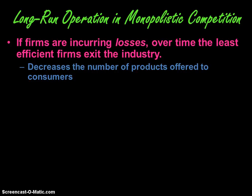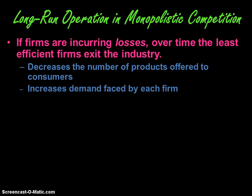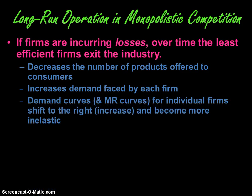This is going to have the opposite effect on the market — it's going to decrease the number of products offered to consumers. Let's say Netflix went out of business; that's going to cause consumers to have less choices than before. This is going to increase the demand faced by the firms that are able to survive and stay in the market. So Walmart DVD rentals and the other options shown on the previous slide are going to have increased demand. The demand curve and marginal revenue curve are going to shift to the right for all those firms that survive and stay in the industry.